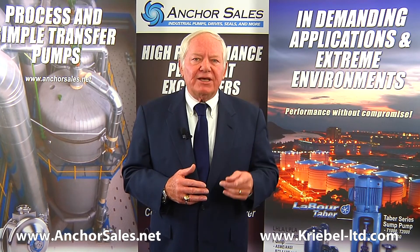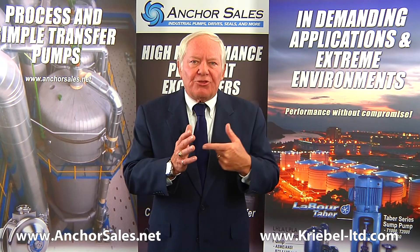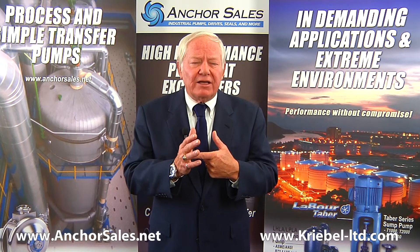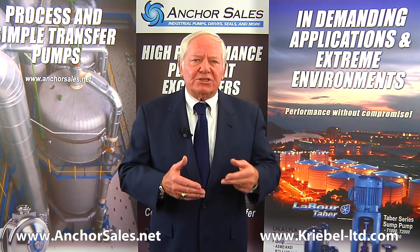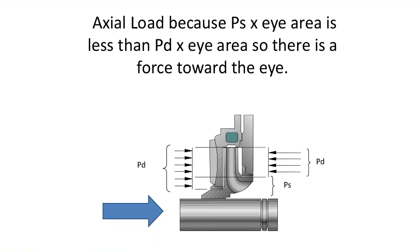All centrifugal pumps have two sets of hydraulic loads: an axial load causing a thrust toward the impeller eye, and a radial load causing a thrust perpendicular to the shaft. This illustrates how the higher pressure acting behind the impeller eye section causes an axial load toward the suction of the pump. This load must be handled by the thrust bearings. As the pump moves back on its curve, the pressure and load can increase to a point causing thrust bearing failure.